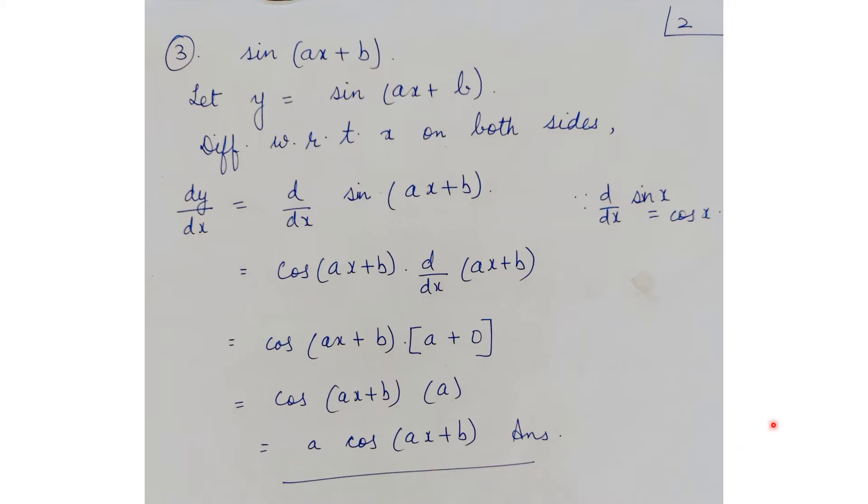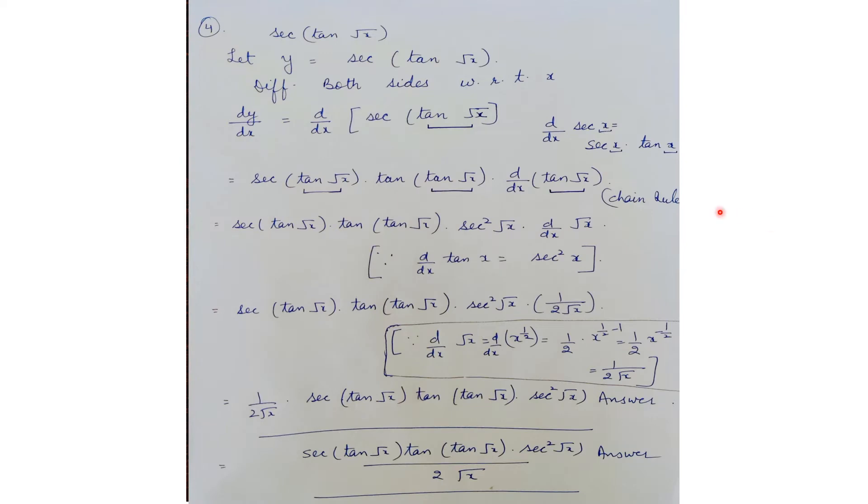So we have cos(ax + b) as it is, multiplied by d/dx(ax) = a, plus d/dx(b) which is a constant = 0. So the answer is a·cos(ax + b), which is the solution of question 3.